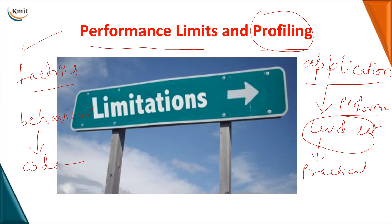So if you are able to understand and analyze the code, you try to optimize it. Once you are able to optimize the code, and based on the factors limiting your performance, you try to make your application reach to the level which you have set. So in order to make an application work to the level set by the user, we need to first understand what factors are affecting the performance and how we can optimize the code. We'll see both of them in detail in today's session.